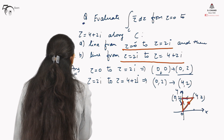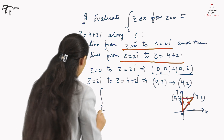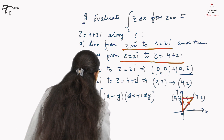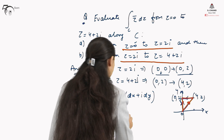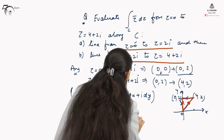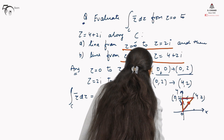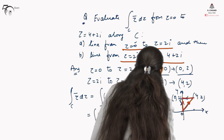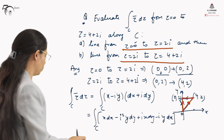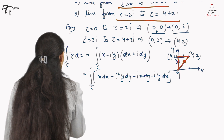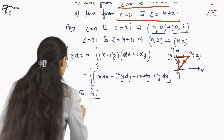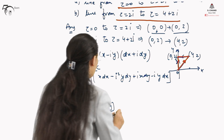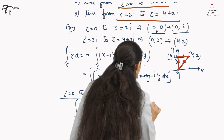To evaluate ∫z̄ dz, we write z̄ = x − iy and dz = dx + i dy. Multiplying out: (x − iy)(dx + i dy) = x dx − i²y dy + ix dy − iy dx = x dx + y dy + i(x dy − y dx). So we can separate the real part (x dx + y dy) and the imaginary part (x dy − y dx).